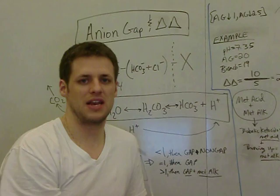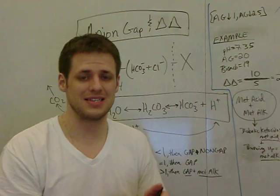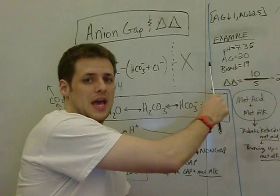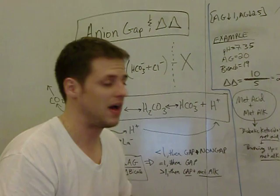So normally, this is 10 to 14 in the blood. Let's say I take you and I infuse a bunch of lactic acid. The lactate would come over here, negatively charged, and the anion gap would go up to something like 18, 20, 25.